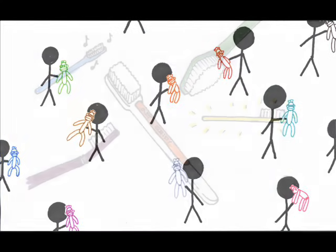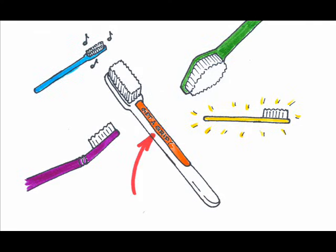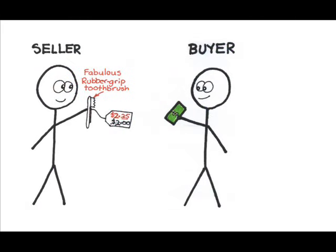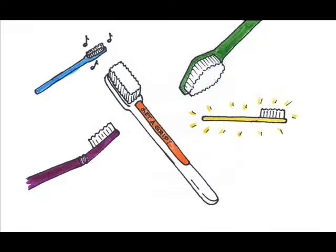Think back to the toothbrush example from episode 25. Toothbrushes are toothbrushes with small differences like angled heads, rubber grip handles, or the ability to play a song to tell you how long to brush your teeth. If I, as the customer, believe that the rubber grip handle is the key to good dental health, then the rubber grip handle toothbrush manufacturer will be able to get me to pay a bit more for the product than for any other kind of toothbrush — though not too much more, or I'll switch to a close substitute. In this toothbrush example, there's real differentiation, where there are physical differences in the products.